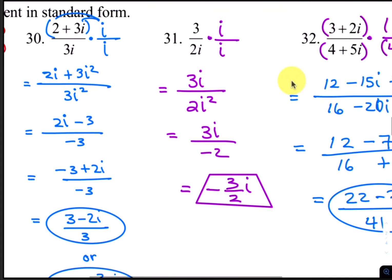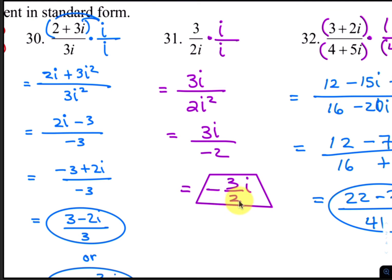For number 31, all you need to do is multiply by i on the top and bottom. So you have 3 times i, or 3i on top. On the bottom, 2i times i is 2i squared, which makes negative 2 in the denominator. Then move the negative in front of the fraction, because you want your denominators always to be positive. So you just have the negative of 3 halves i.